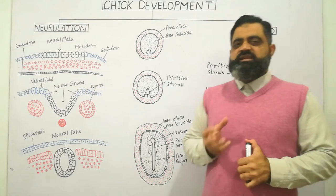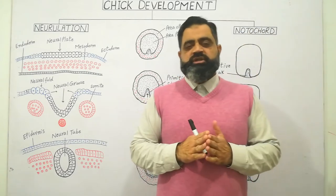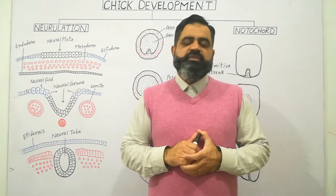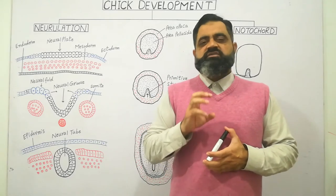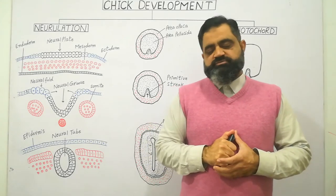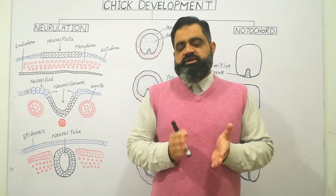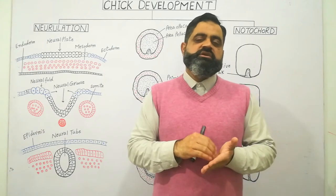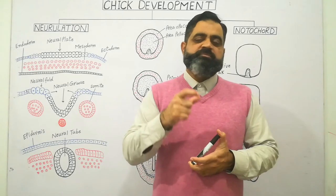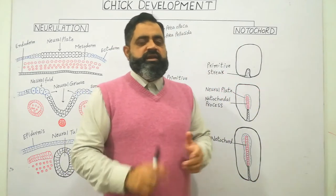This invagination is known as Hensen's node, and the cells migrating through Hensen's node are going to form the notochord. As you know, the notochord is a rod-like structure present in the embryonic state of all vertebrate animals, made up of vacuolated cells filled with proteinaceous material. The notochord is a basic structure present in all vertebrates during the embryonic stage. This notochord is later modified into the vertebral column in the adult stage of most vertebrates. The notochord is the main axis of the body around which all body organs develop.